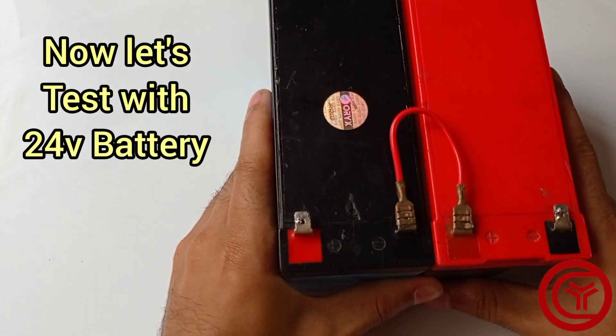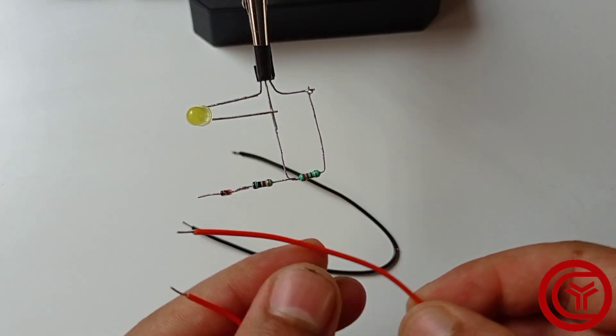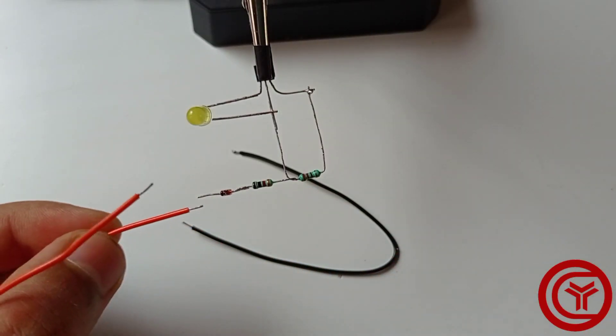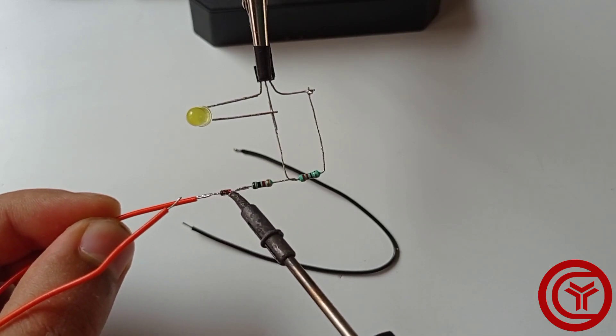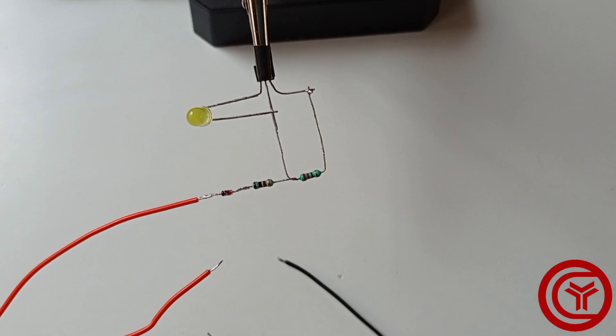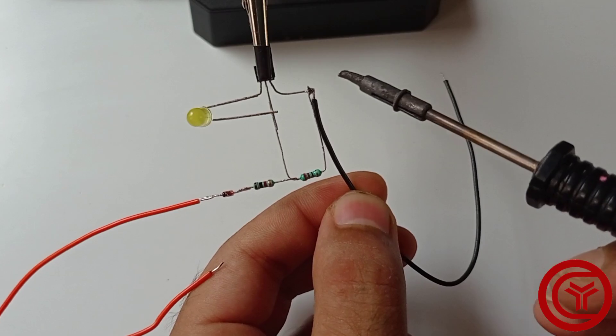Now let's test the circuit with 24V Battery. For that I will connect 2 wires with the circuit. Positive wire with Zener diode's negative side. Solder negative wire with emitter of transistor.